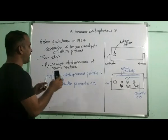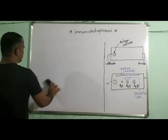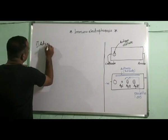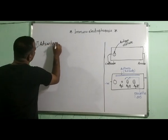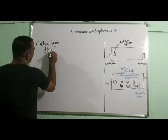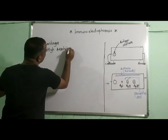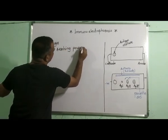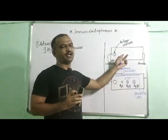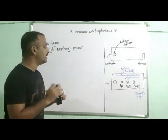This particular technique has certain advantages. The advantages of agarose gel electrophoresis include high resolving power. The resolving power of immunoelectrophoresis is very high because we are using two techniques: agarose gel electrophoresis for separation of antigens and octotonic double immunodiffusion.